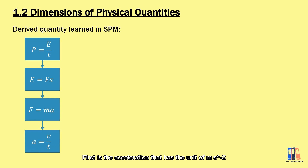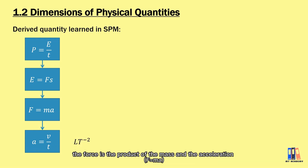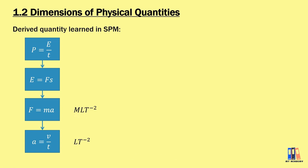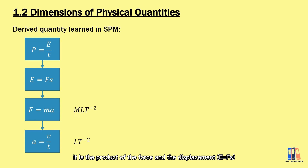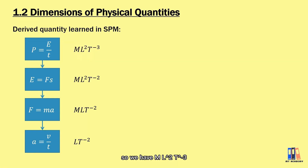We can now identify the dimensions of these derived quantities. Acceleration has units of meter per second squared, so its dimension is L/T². Force is the product of mass and acceleration, adding M to give ML/T². Energy is force times displacement (a length), giving ML²/T². Finally, power is energy divided by time, giving dimension ML²/T³.